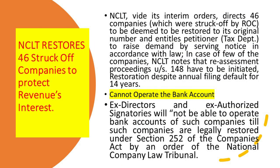NCLT restored 46 struck off companies' names to protect revenue interest. NCLT across India, via interim orders, directed 46 companies which were struck off by the ROC to be deemed restored to their original status as entities, to allow the tax department to raise demand by serving notice in accordance with the law. In the case of a few of these companies, NCLT noted that re-assessment procedures under Section 148 of the Income Tax Act had to be initiated.